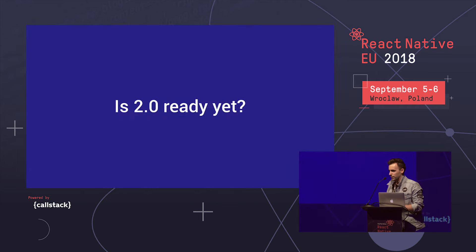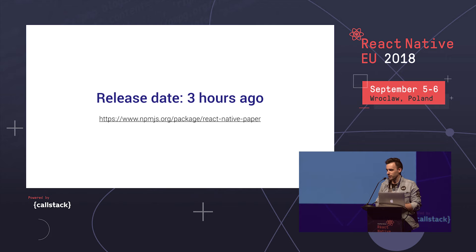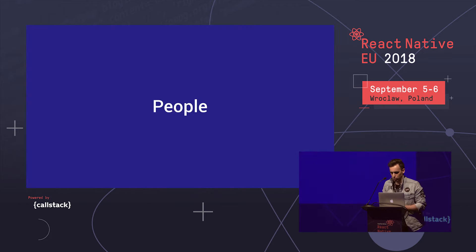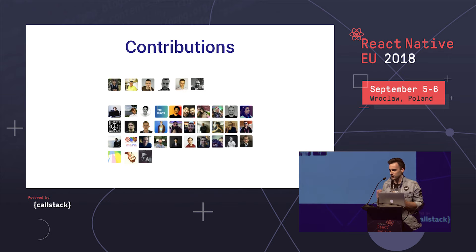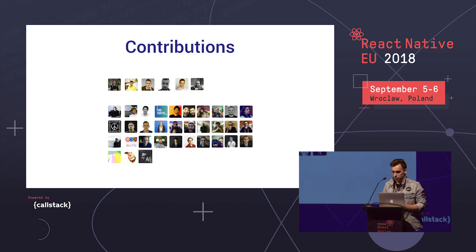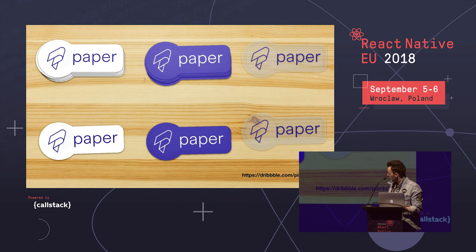So when is 2.0 ready? It's ready — it was released three hours ago! You can go try it out, and we'll be at the Callstack booth to answer any questions about Paper. We have a small core team at Callstack maintaining Paper, but we have a lot of external contributors and we'd love more. All our contributors are shown here — please come help us. We help anyone who wants to contribute; just open a pull request. We have many components that still need to be written, so it's a great opportunity. We also have a nice logo and stickers available at our booth. Thank you!